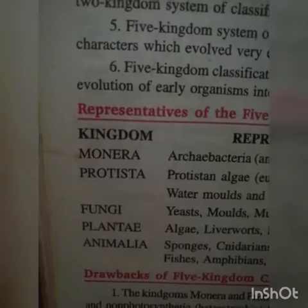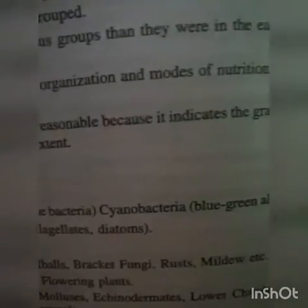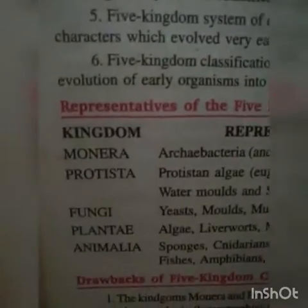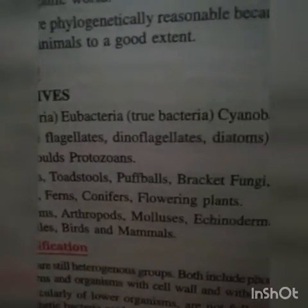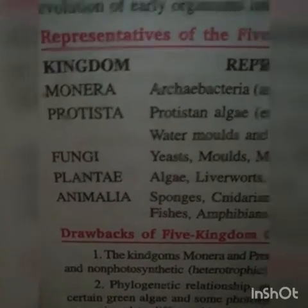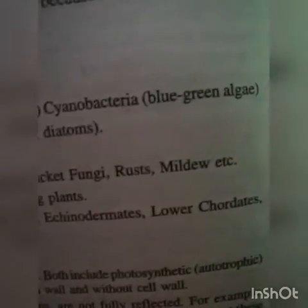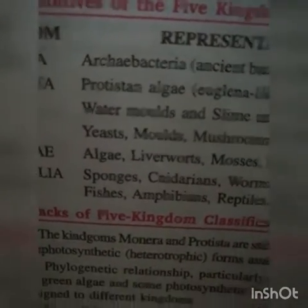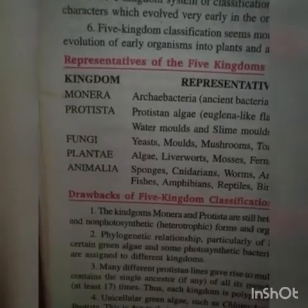In Protista, only unicellular animals, plants, or fungi-like organisms are kept. Fungi includes yeast, mold, mushroom, toadstool, puffball, bracket fungi, rust, mildew, etc. Plantae includes algae, liverworts, mosses, ferns, conifers, and flowering plants. Animalia includes sponges, cnidarians, worms, arthropods, mollusks, echinoderms, lower chordates, fishes, amphibians, reptiles, birds, and mammals.